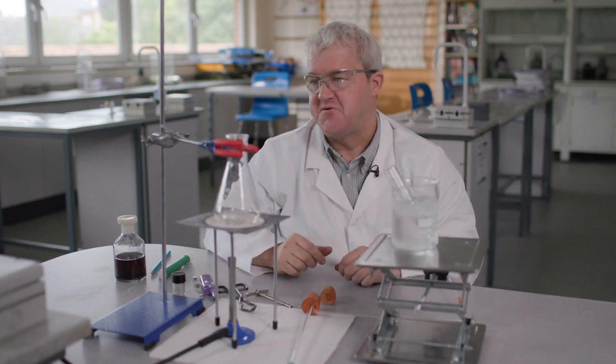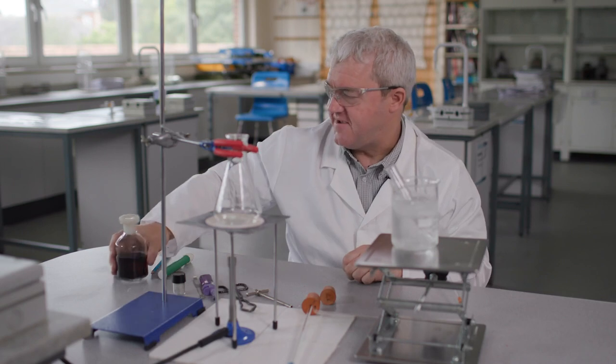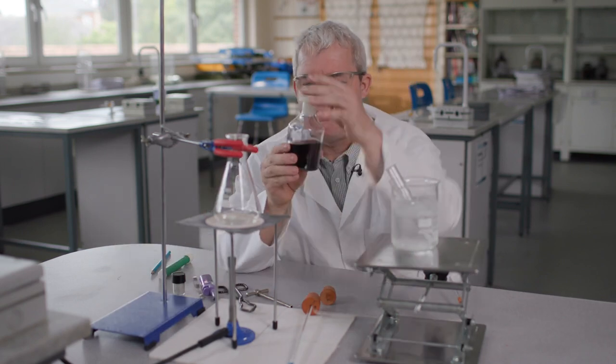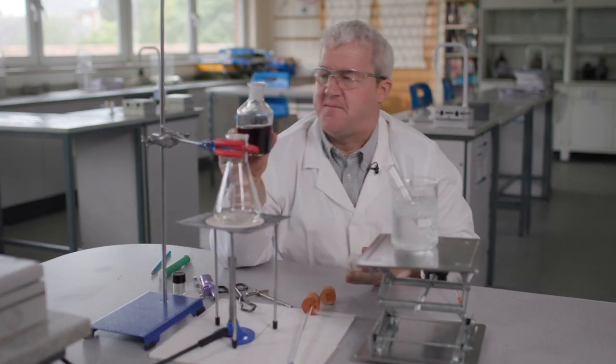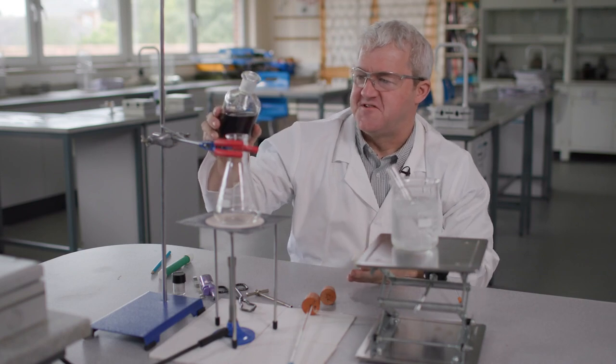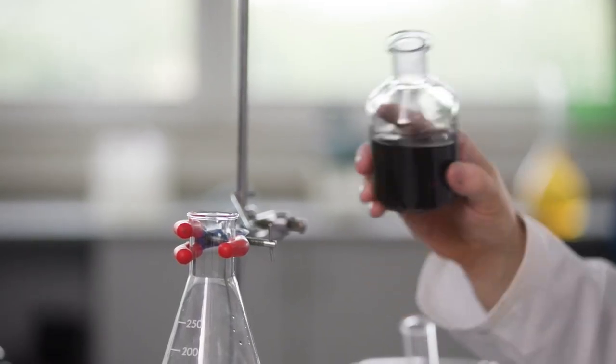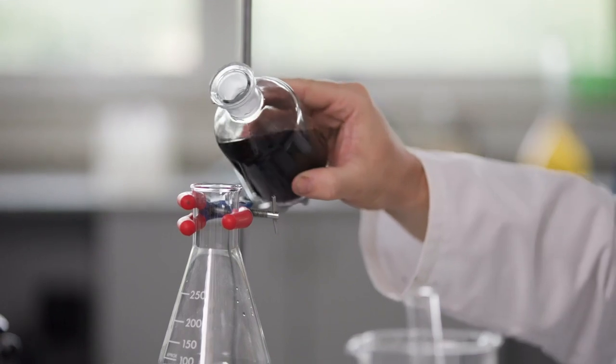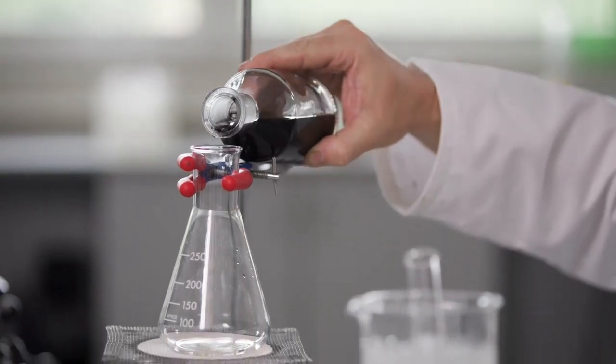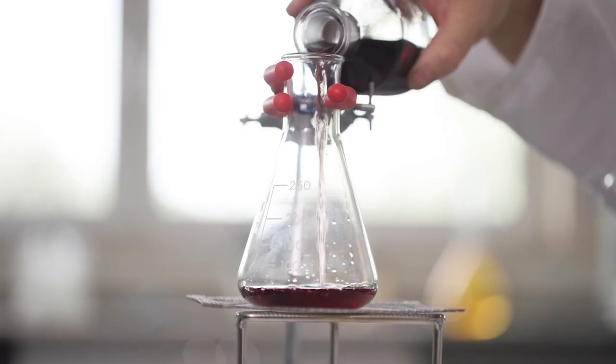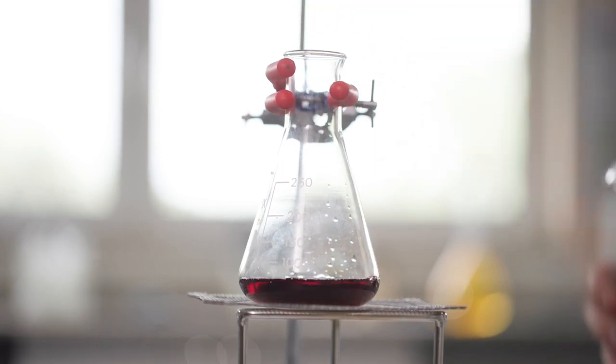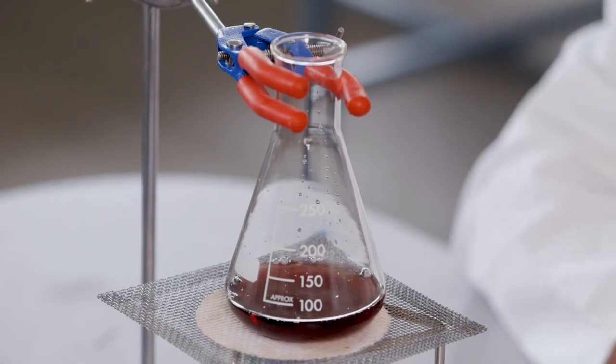Now I'm going to add some ink to the conical flask here and I've got some black ink. I've prepared this by putting a few drops of just fountain pen ink in 200 mils of water. Need to add approximately 50 centimetres cubed. The volume isn't critical.